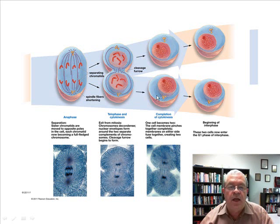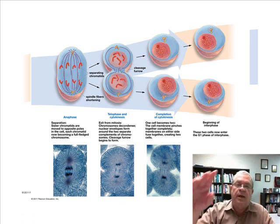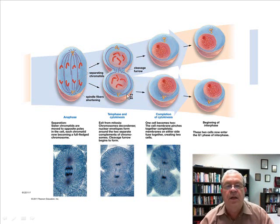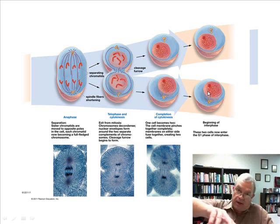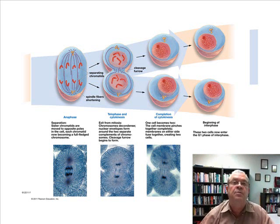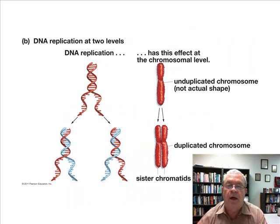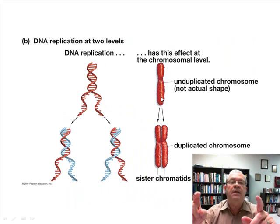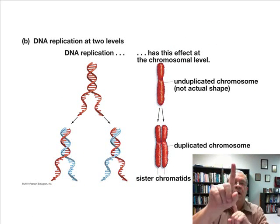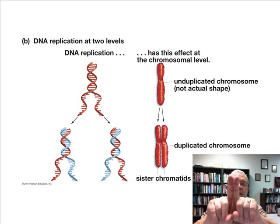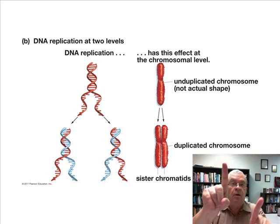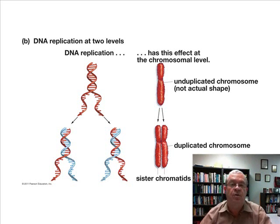As cells re-enter interphase, all the chromosomes are unduplicated. But if these cells are going to divide again, before the cycle goes around again, every single one of those chromosomes must be duplicated. Chromosome duplication is when one unduplicated chromosome becomes two identical sister chromatids — a duplicated chromosome.